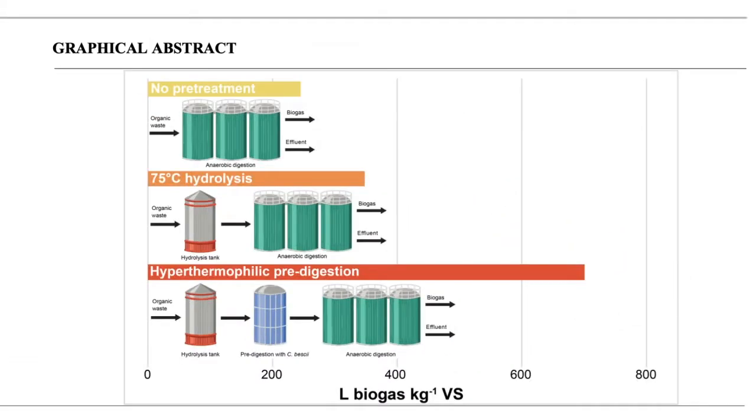A new method for pre-treating bio-waste with Caldicellulose Ruptor Bescii, a lignocellulolytic hyperthermophile, can significantly increase energy output and waste disposal by anaerobic digestion.